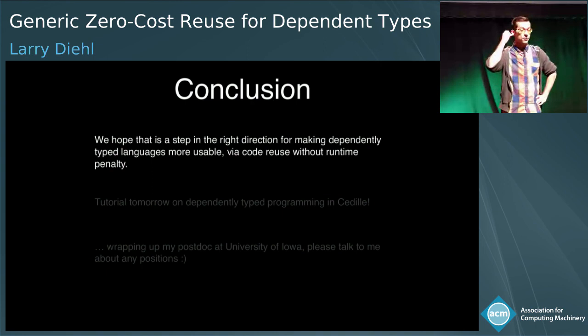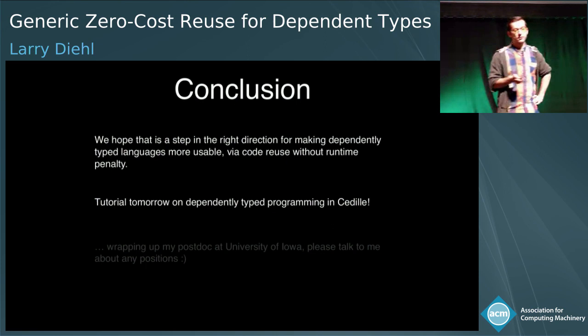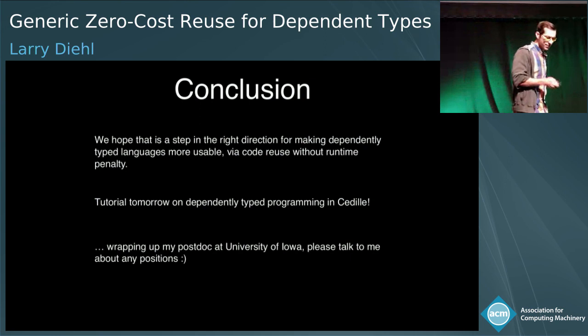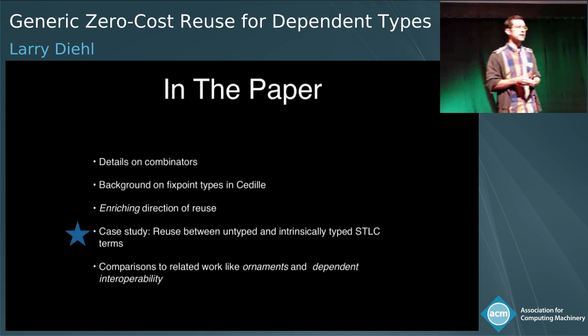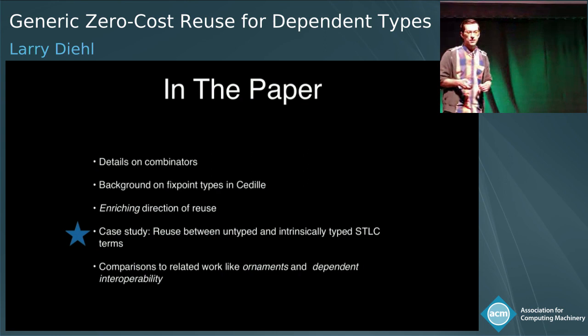For the conclusion, we hope this is a step in the right direction for making dependently typed languages more usable via code reuse without runtime penalty. In the paper you can find a number of things; one I'd like to highlight is a case study showing reuse between untyped and intrinsically typed STLC terms, which share a non-trivial relationship because not every untyped term is also an intrinsically typed term—and that's where things get interesting.